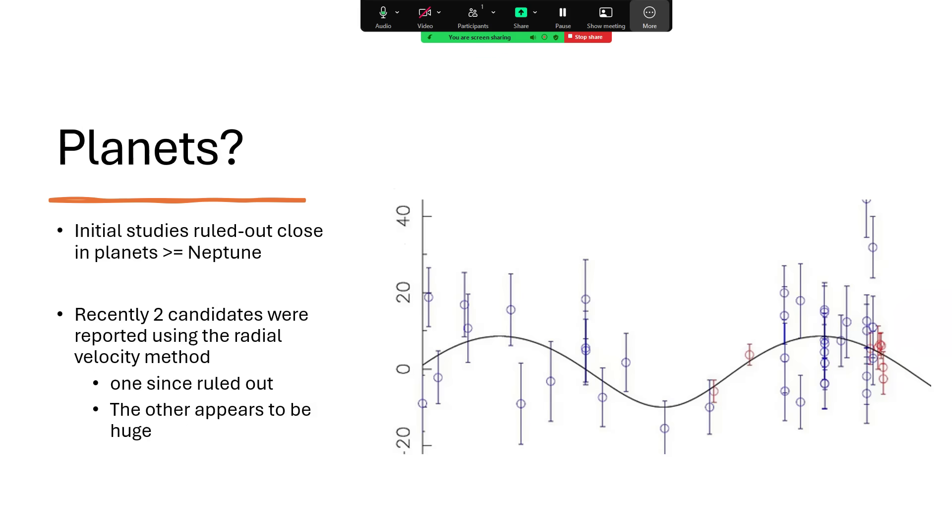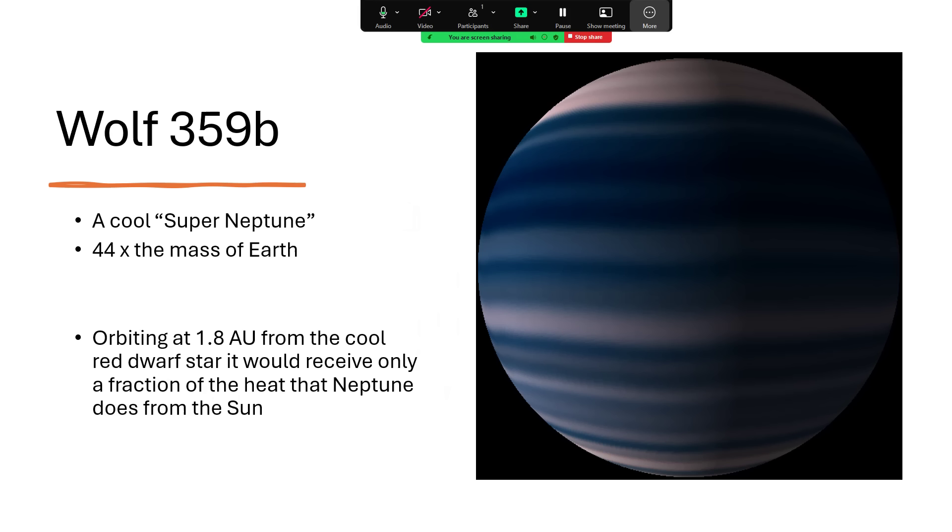Now in terms of planets, this is something that I'm very interested in. The initial studies failed to reveal any decent-sized planets close in. Anything greater than or equal to the size of Neptune in a fairly close orbit was ruled out by a combination of radial velocity studies and no detections of any significant transits. But recently, the radial velocity method has suggested that we have a couple of planets based on the curve that you see here. You can see the plotted points with their error bars. Since the initial announcement of two planets, one of them has been ruled out, but the other one does indeed appear to be there.